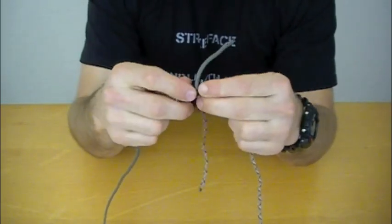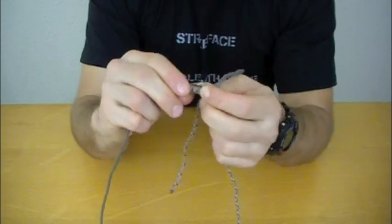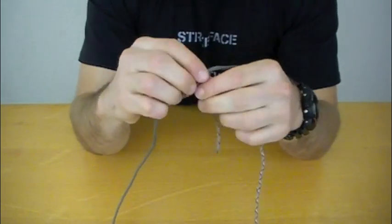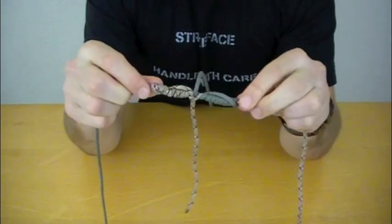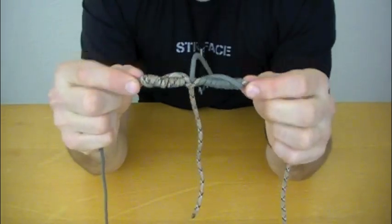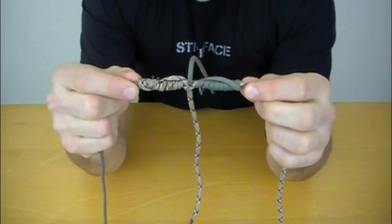So definitely not the best thing in the world to use for paracord. Again, we'd suggest the double fisherman's knot if you're using actual rope or cord. But for monofilament line, it works extremely well. This has been an ITS Tactical video on the blood knot. Thanks for watching!